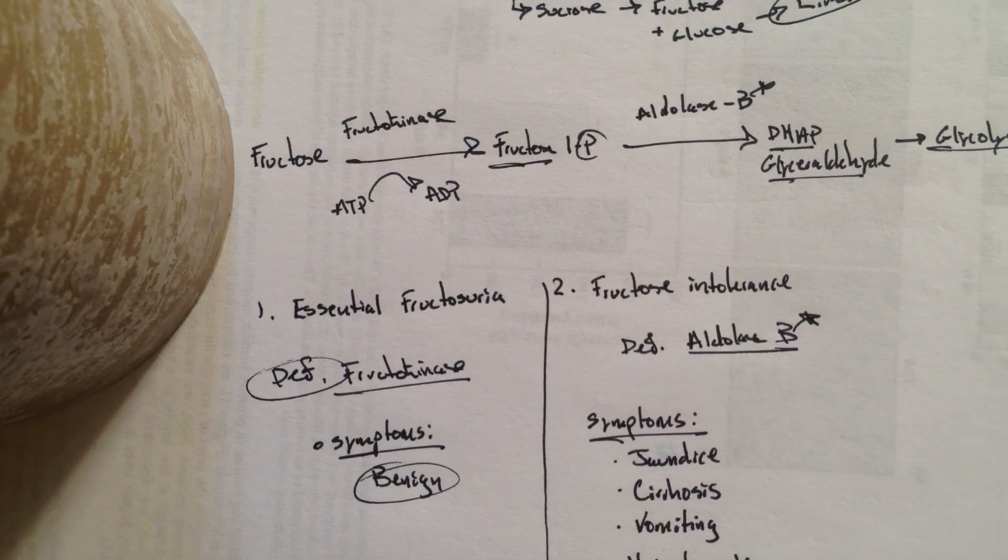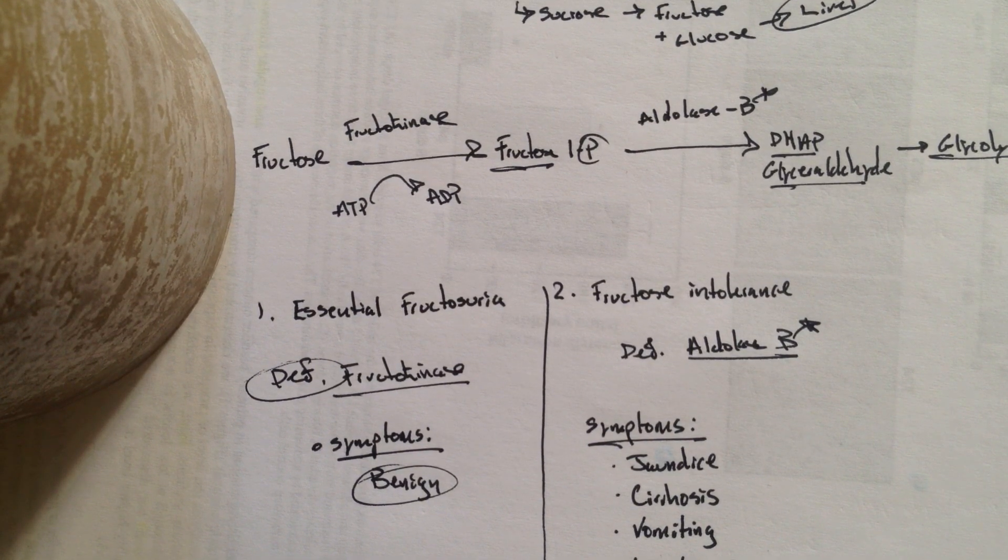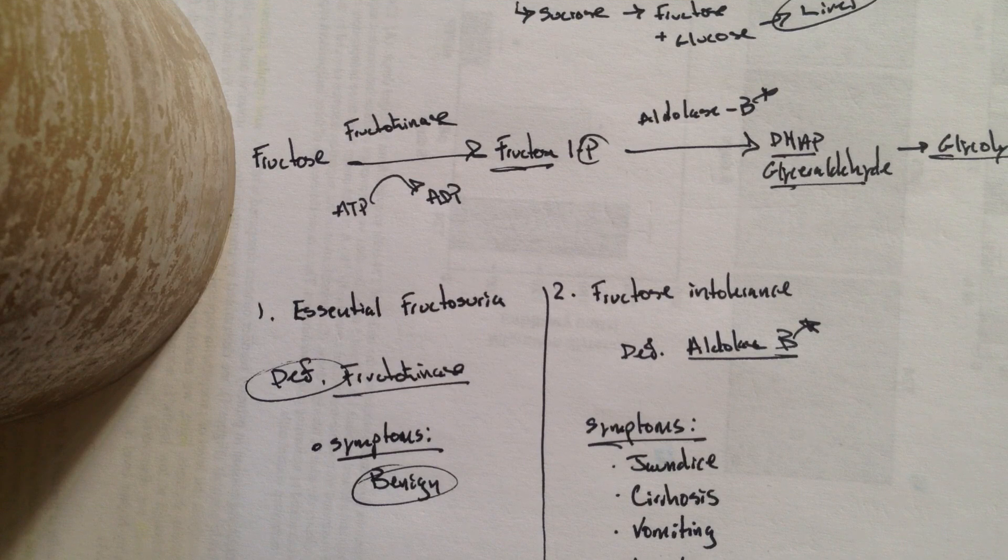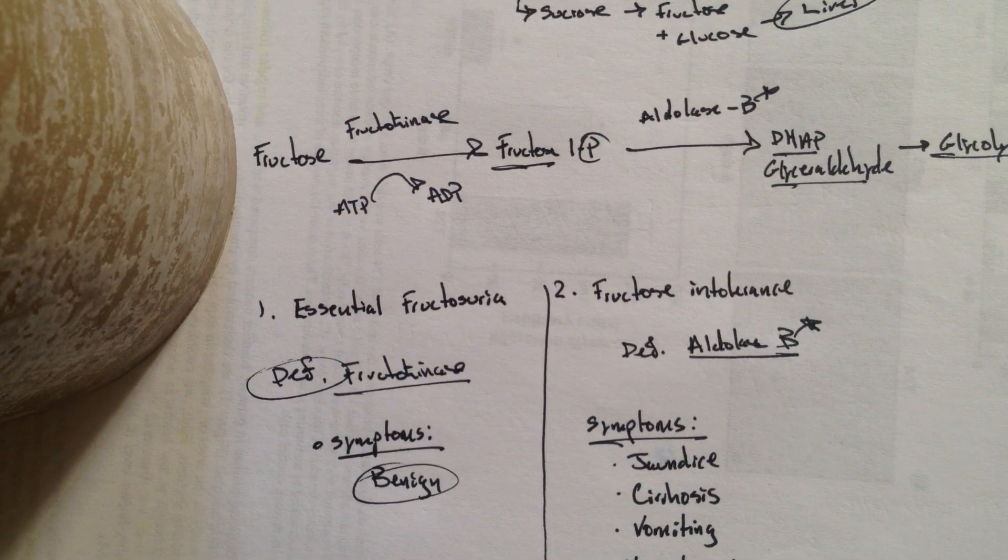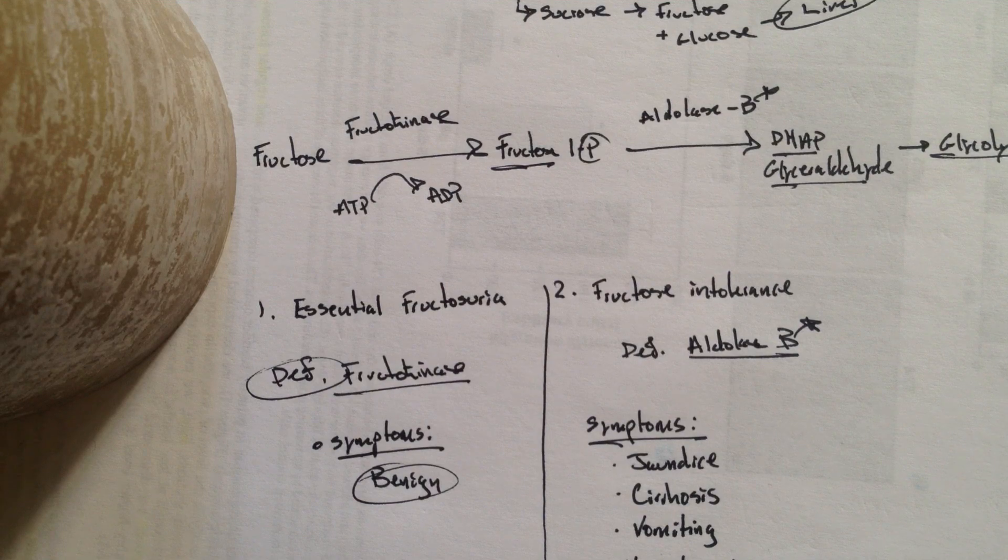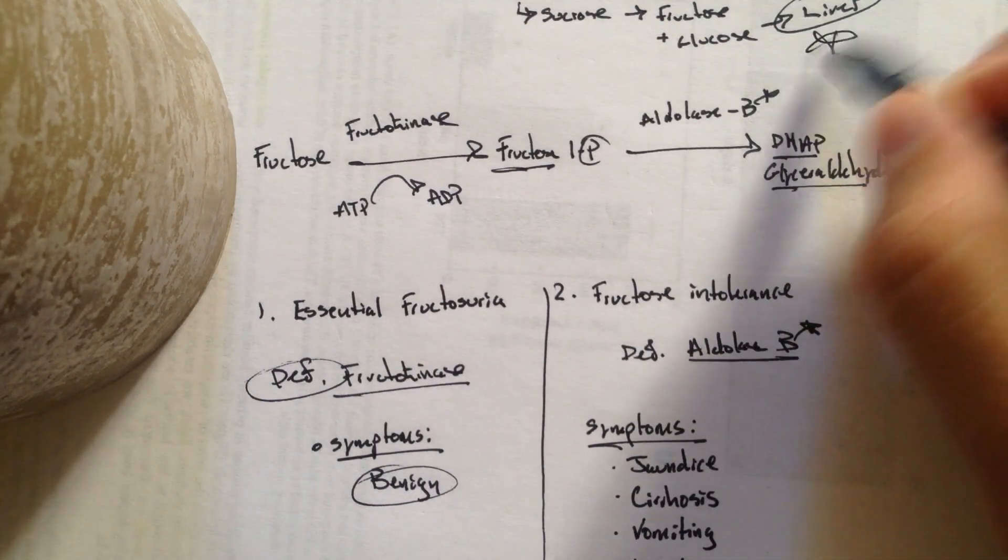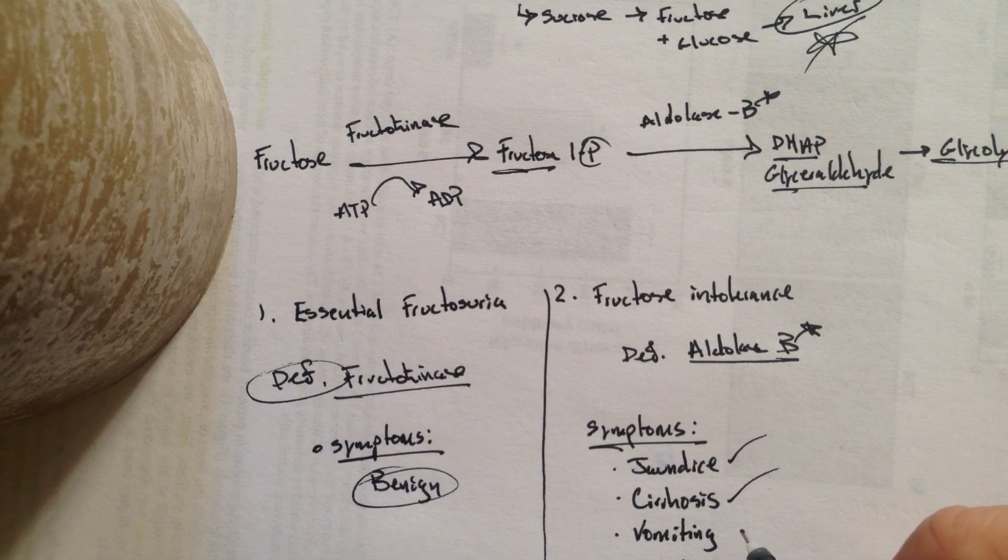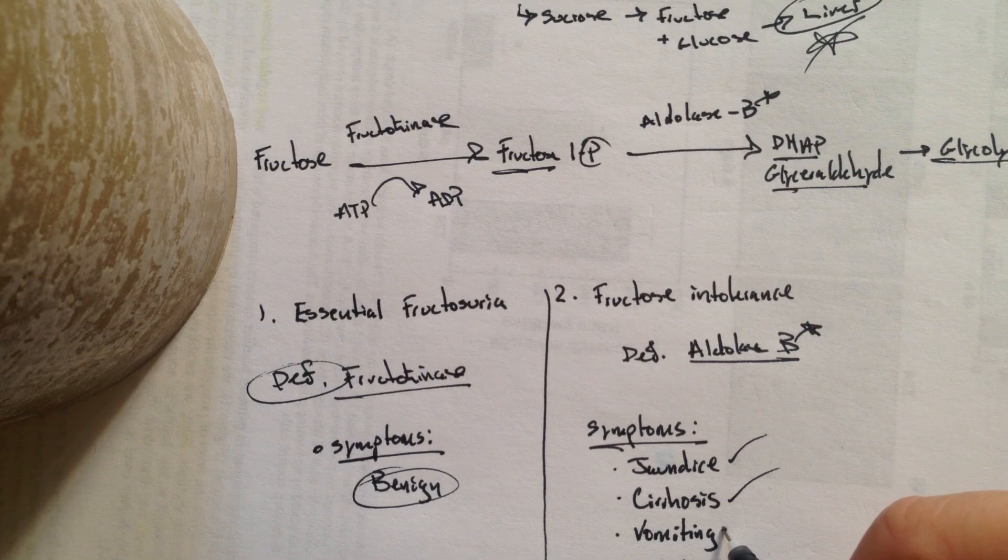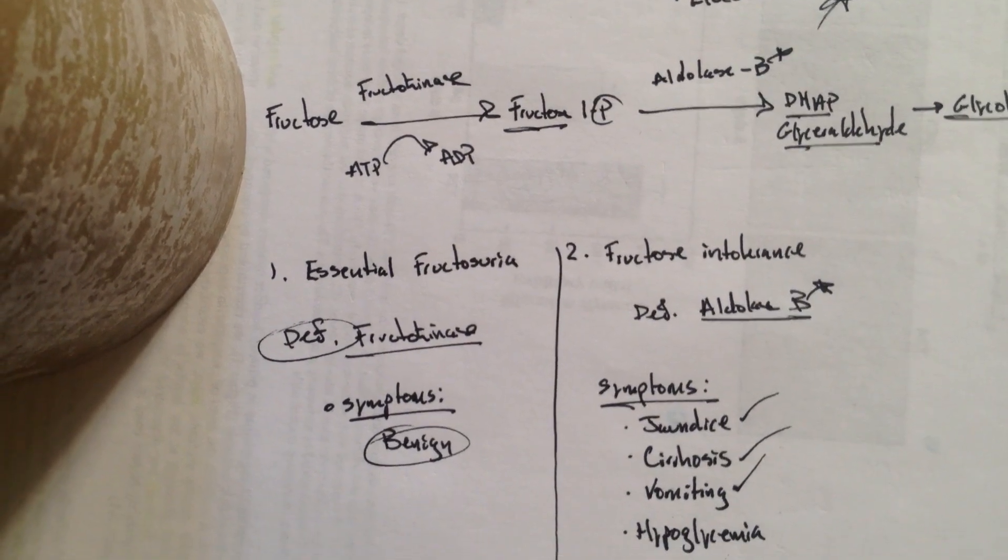So important to know that. Aldolase B. So what happens, basically fructose 1-phosphate is going to build up in the cells when you don't have aldolase B to break it down to the metabolites, DHAP and glyceraldehyde. So fructose 1-phosphate builds up in the cells in the liver, where we said it's going to go, the liver. And it's going to cause jaundice. It's going to cause cirrhosis. Baby's going to vomit.